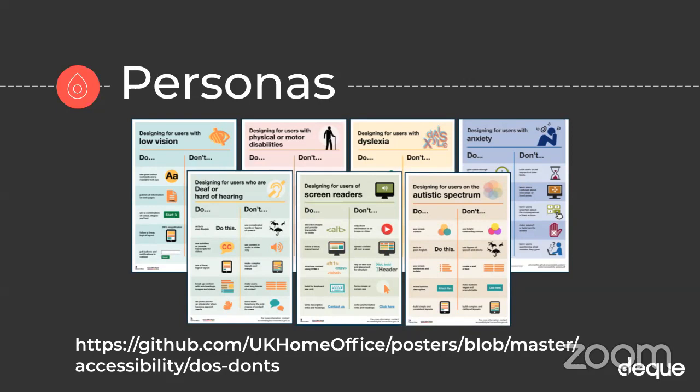It's important to point out that personas are not based on real people or stereotypes, and they're not a substitute for user testing. They're only useful if actually used, should be based on real data, supported across all departments, and communicated early and often. Think of them as a tool to create empathy — but don't take any one persona to heart, it's just a way to start thinking about diverse users.